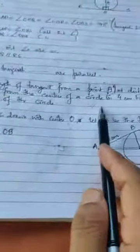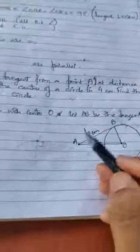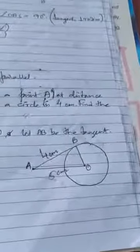The length of tangent from point A is four centimeters. Next, at distance five centimeters from the center of a circle - this is the center of the circle O. The distance from the center is five centimeters to point A.